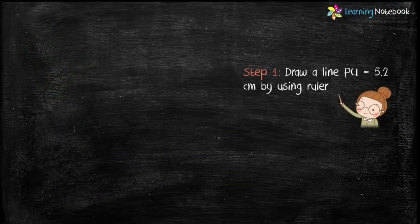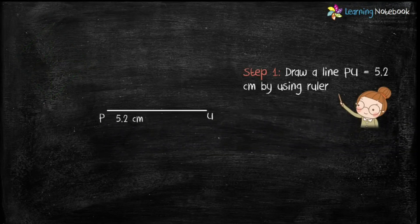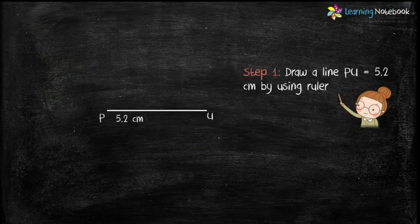So, let's start the construction and draw a line PU equals to 5.2 cm with the help of a ruler.